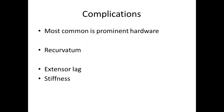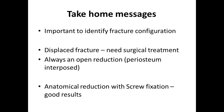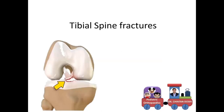Complications of tibial tuberosity fractures include: prominent hardware requiring removal, recurvatum due to early anterior physis fusion, extensor lag because of the initial avulsion fracture and prolonged quadriceps immobilization, and stiffness with very long immobilization periods. Take-home messages: it is important to identify the fracture configuration. Displaced fractures almost always need surgical management with open reduction — not closed reduction — because there is almost always periosteum interposed that must be removed. Anatomical reduction with screw fixation gives good long-term results. The main drawback is prominent hardware which can be removed once healed.